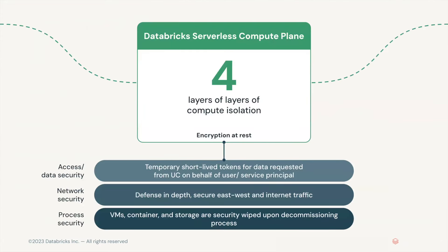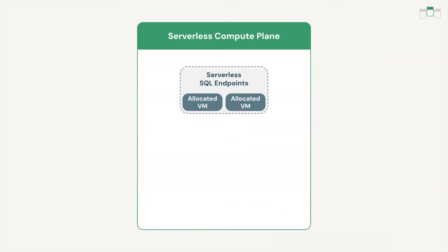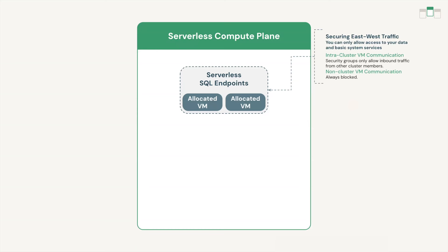Moving on to the serverless compute plane: we employ four layers of isolation to keep customer workloads secure, only leverage temporary short-lived tokens for any data access, and offer a strict process of decommissioning compute once it's no longer needed. Whenever a customer spins up a new serverless compute resource — for example a new SQL endpoint — we dedicate VMs to that workload for that customer. Each compute resource is restricted to a logical network boundary that only permits the VMs of a compute resource to be accessed from other VMs in the same compute resource or control plane. Network isolation is achieved using Azure Application Security Groups or AWS Security Groups, network policies and local firewalls which prevent inbound communications from external sources.